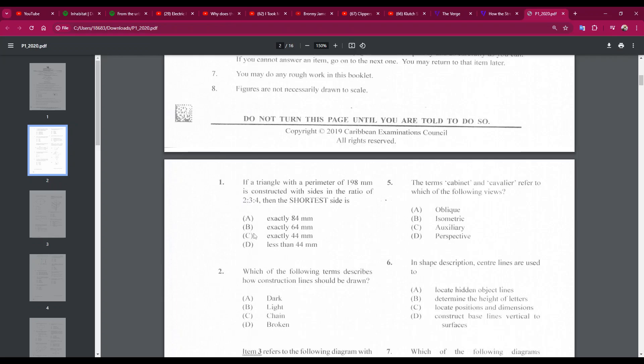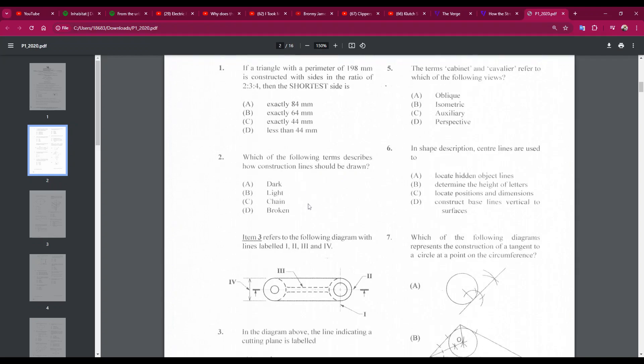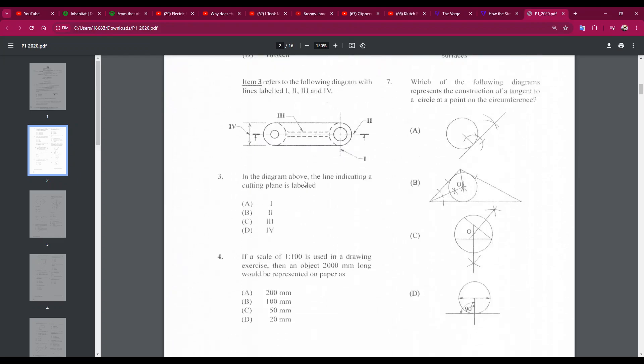Number two: which of the following terms describes how construction lines should be drawn? The answer is B, light. Number three: in the diagram above, the line indicating a cutting plane is labeled...